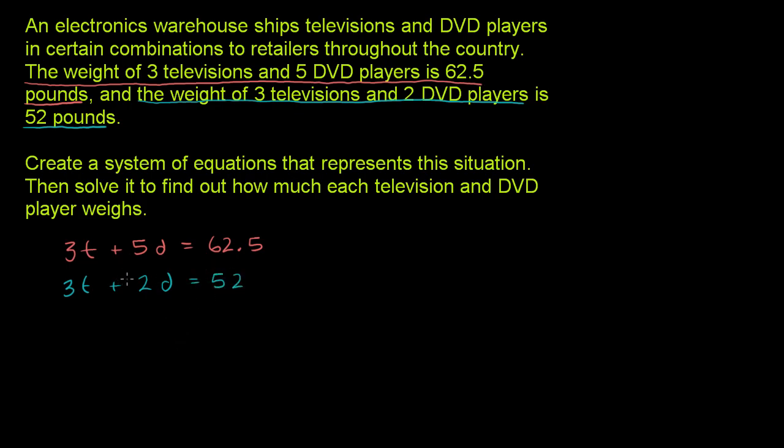And so now we've set up the system of equations. We've done the first part to create a system that represents the situation. Now we need to solve it. Now one thing that's especially tempting when you have two systems and both of them have a 3T here and a 3T here, is we can multiply one of the systems by some factor so that if we were to add this equation to that equation, we would get one of the terms to cancel out.